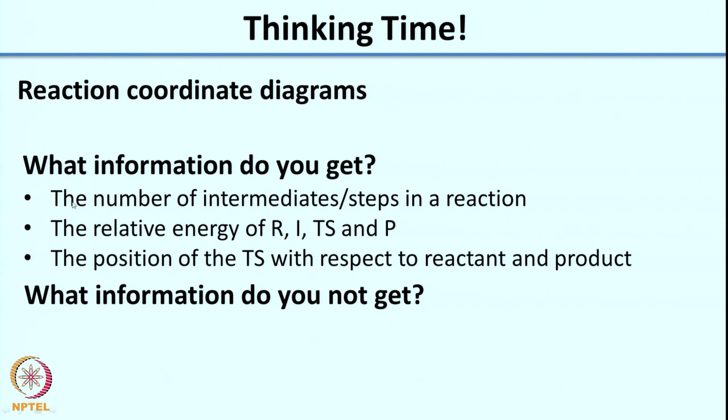Now if you remember, I had asked you earlier about reaction coordinate diagrams and what information you can get from them. The information you get is: the number of intermediate steps in a reaction, the relative energy of the reactant, intermediate, transition state, and product, and the position of the transition state with respect to reactant and product. The relative energy translates to kinetic and thermodynamic control; the position of the transition state postulate translates to the Hammond postulate.